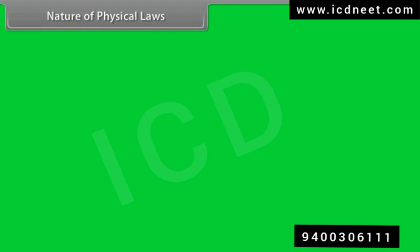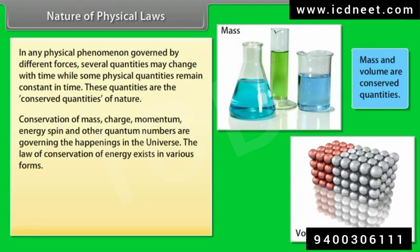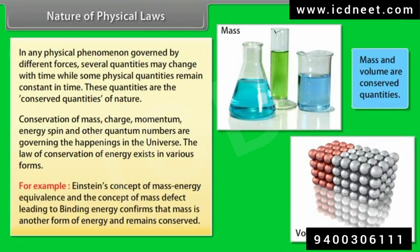Nature of physical laws: in any physical phenomenon governed by different forces, several quantities may change with time, while some physical quantities remain constant in time. These are the conserved quantities of nature. Conservation of mass, charge, momentum, energy, spin, and other quantum numbers govern the happenings in the universe. The law of conservation of energy exists in various forms — for example, Einstein's concept of mass-energy equivalence and the concept of mass defect leading to binding energy confirms that mass is another form of energy and remains conserved.